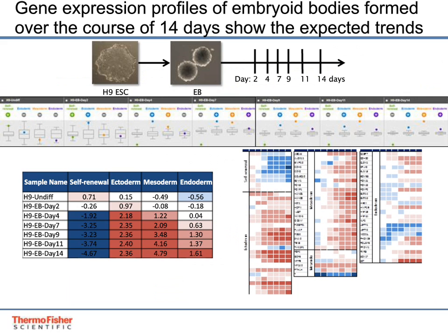The data shown here are the details of the EB time course seen previously in this presentation. H9 ESCs were cultured in KSR-based media on irradiated MEFs prior to removal of FGF. H9 EBs were cultured in suspension over the course of 14 days prior to scorecard analysis. The summary shows that the cells are positive for pluripotency. EB formation at day two is positive for ectoderm but negative for mesoderm and endoderm. As EB formation progresses from day four to day 14, scores for all three germ layers continue to increase whereas scores for the self-renewal factors decrease. The table with scores also reflects the same pattern.